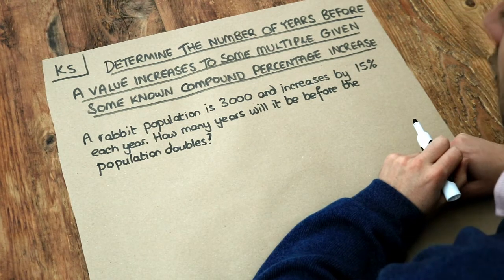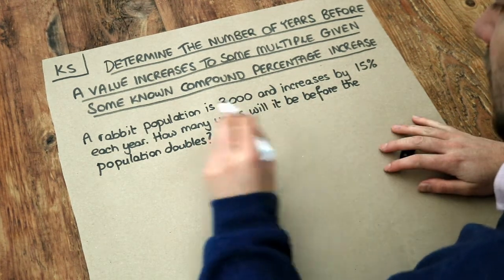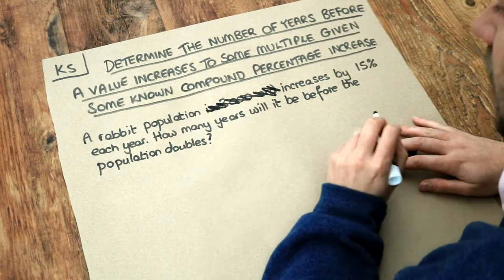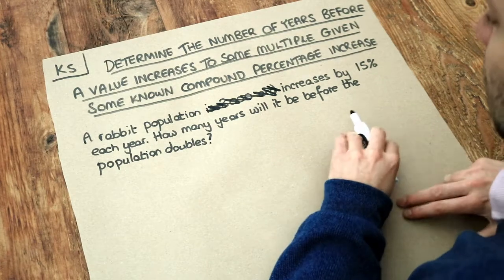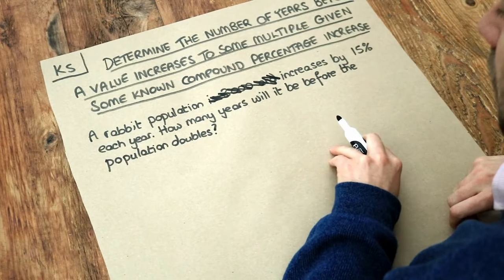Now the first thing to note is that actually we didn't need the original population. We could just say a rabbit population increases by 15% each year. How many years will it be before the population doubles? We can just start with any value we like for the rabbit population.